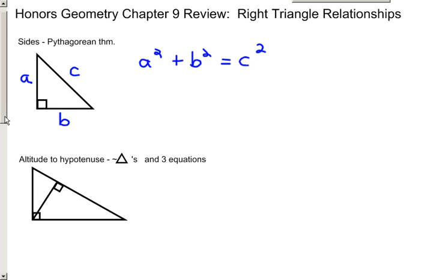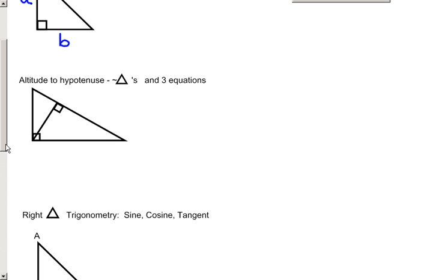The second main topic in Chapter 9 was the altitude to hypotenuse theorems, which came out of similar triangles as well. When you have an altitude drawn to a hypotenuse of a right triangle, it creates three sets of similar triangles.